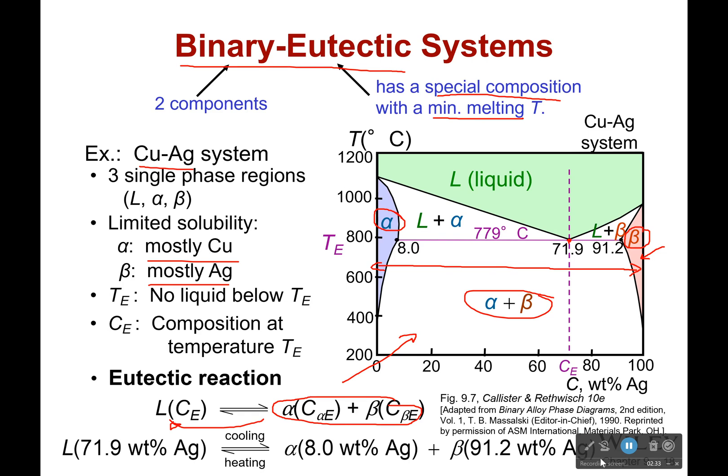What we're going to have is an 8 weight percent silver alpha phase and a 91.2 weight percent silver beta phase that mix together to turn into a perfect liquid phase that is 71.9 weight percent silver. And if we cool or heat, it will go from one phase, which is liquid, to two phase mixture of alpha and beta.